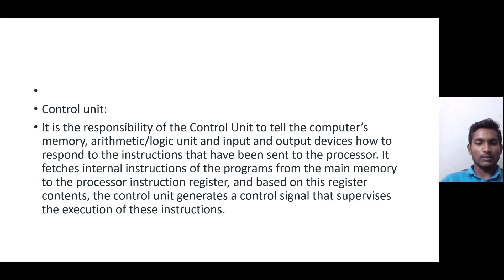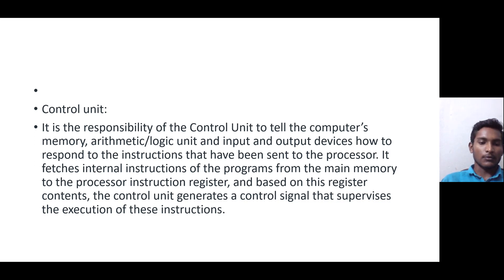The control unit is responsible for telling the computer's memory, ALU, and I/O devices how to respond to the instructions sent to the processor. It fetches internal instructions from the main memory to the processor's instruction register, and based on this register, the control unit generates control signals that supervise the execution of instructions. The control unit gives impulse signals to control all parts of the computer. Thank you, this is my seminar.